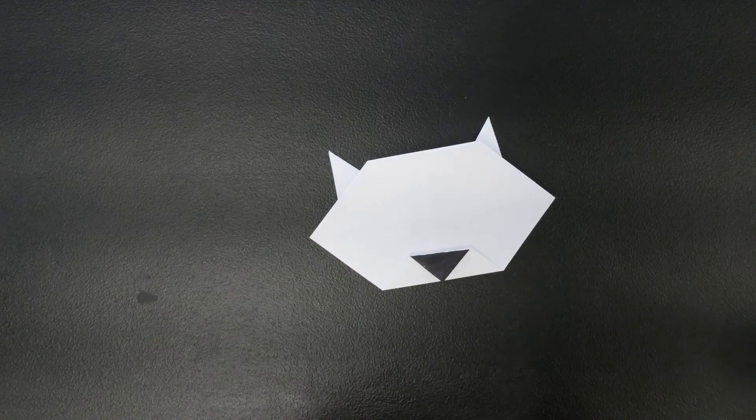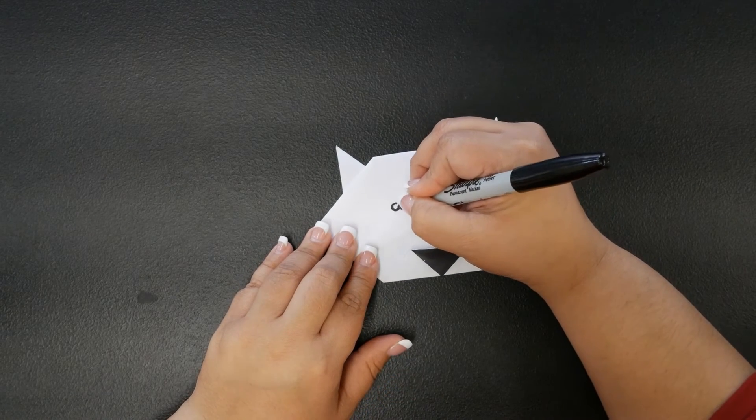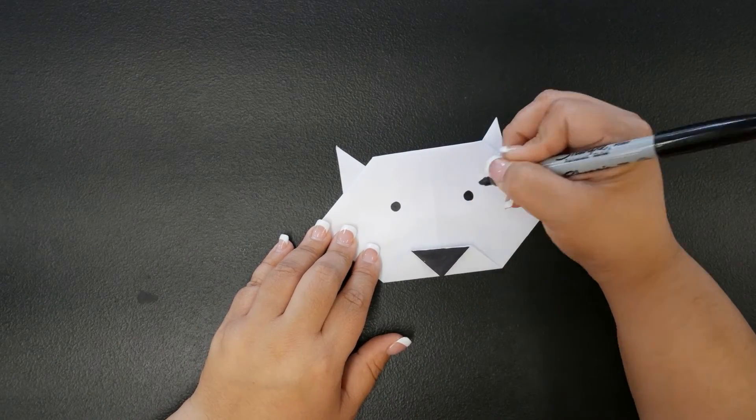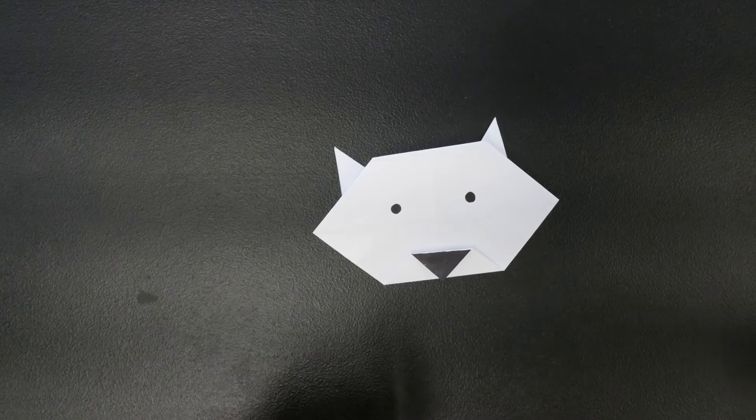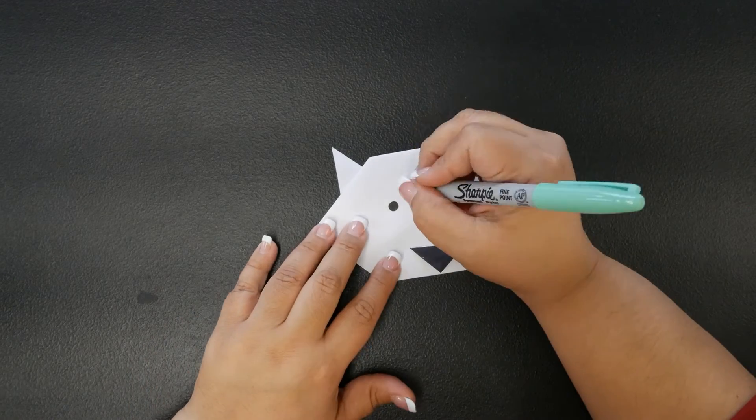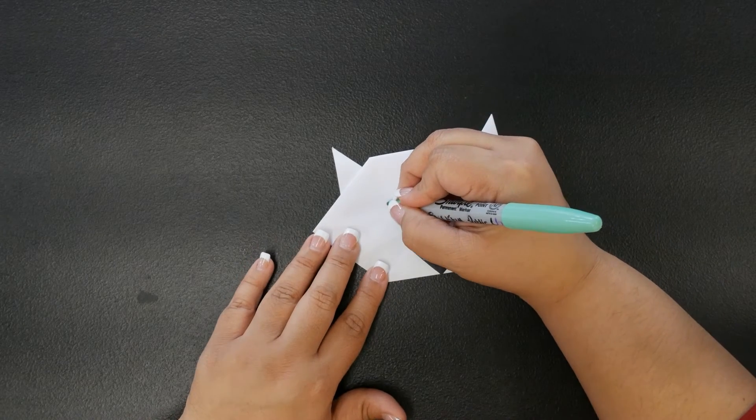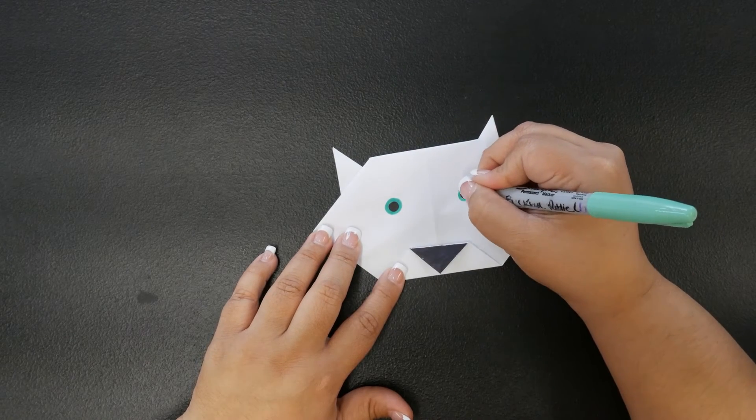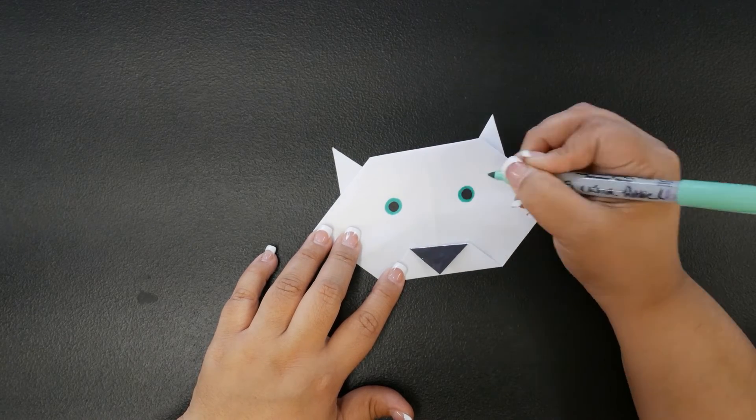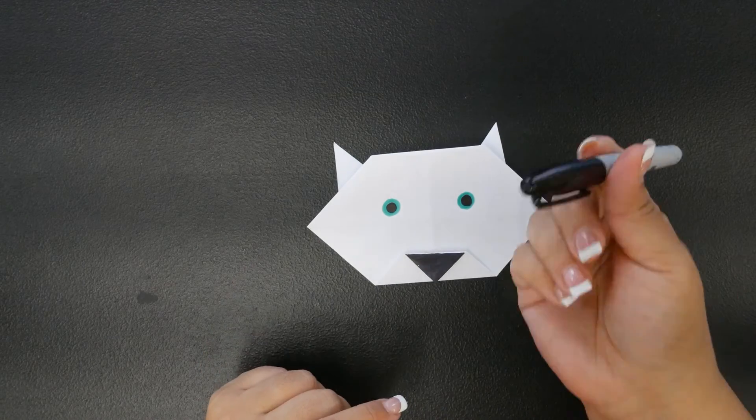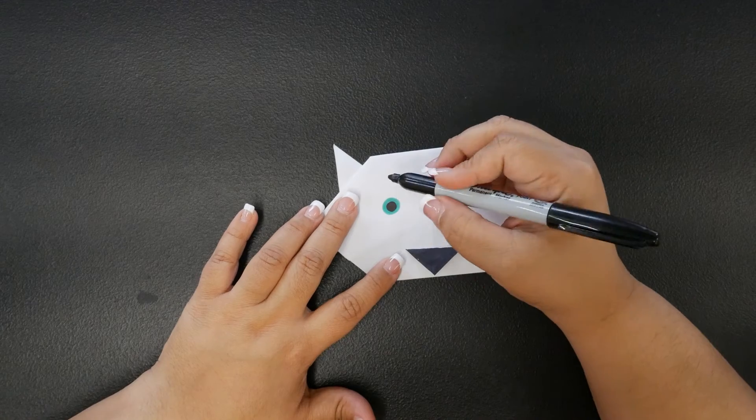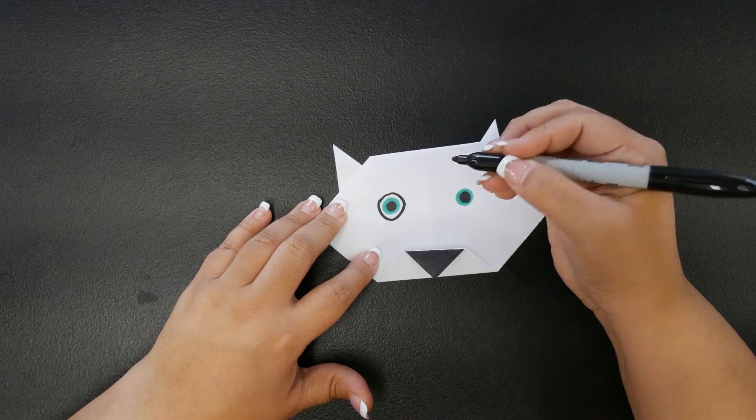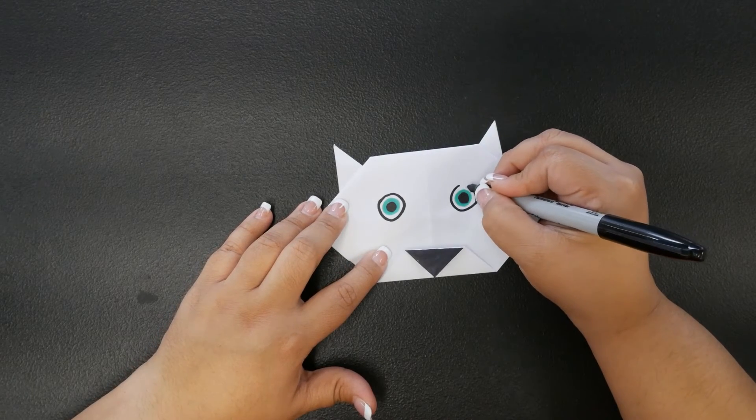I'll just work on his eyes. For his eyes, I'm just going to do a few circles here. I'm going to start off with black. And then I'm going to do a ring, a green ring around the black. Beautiful green eyes. And then I'm going to go back to my black and draw a circle leaving a white edge around my green eyes.